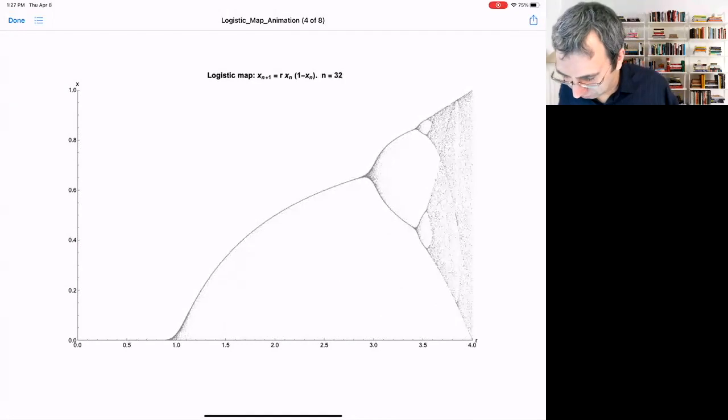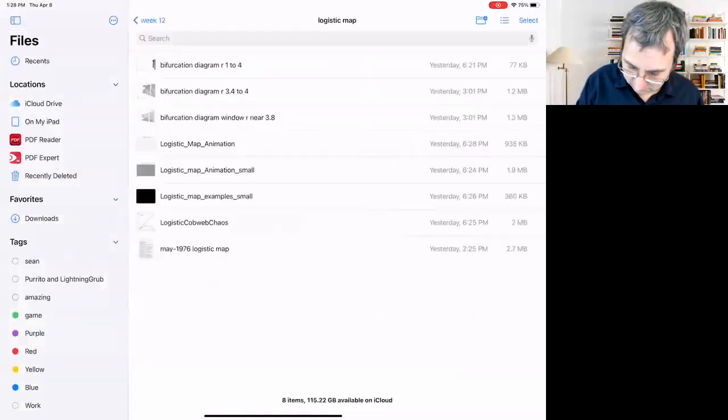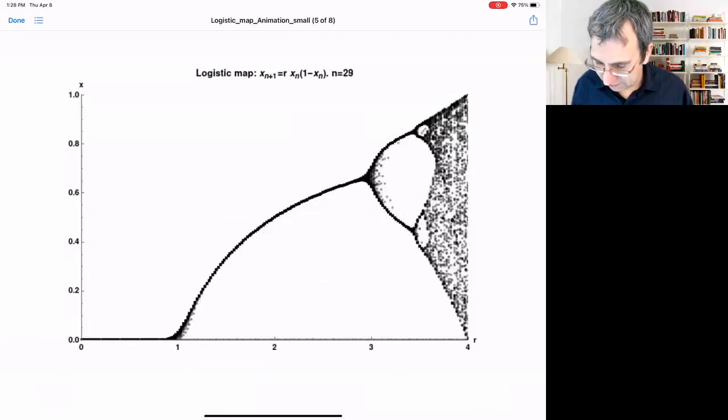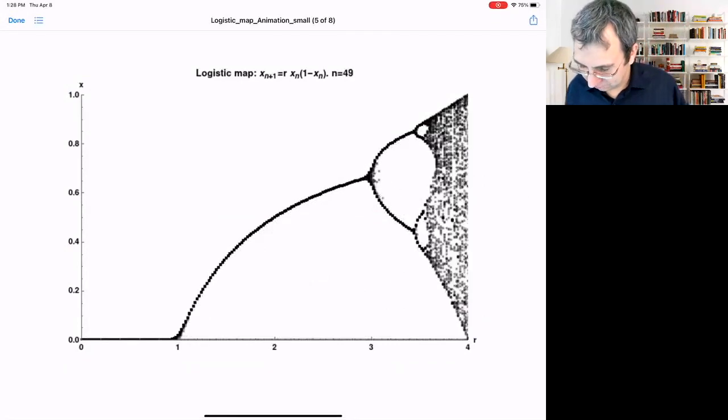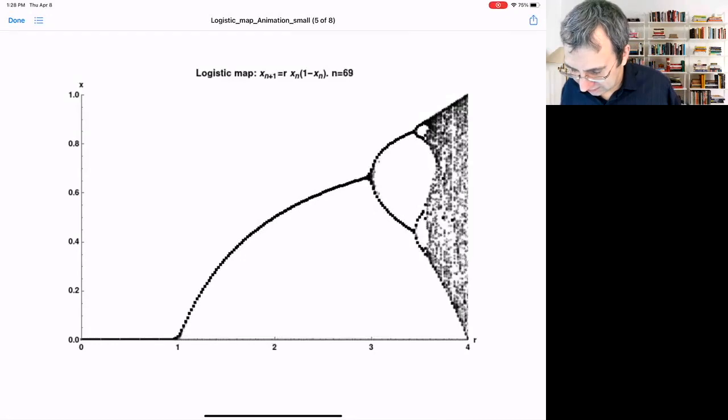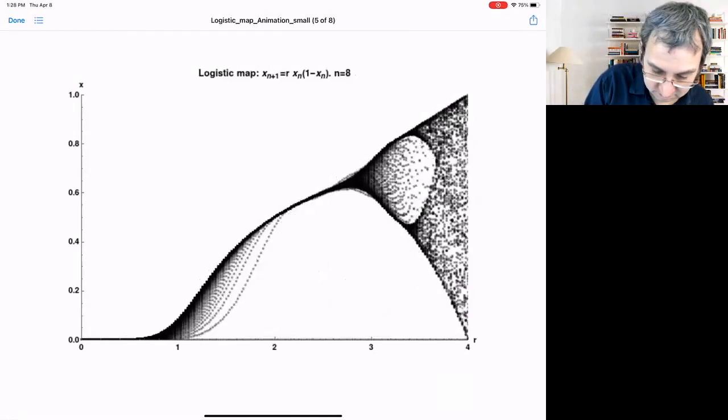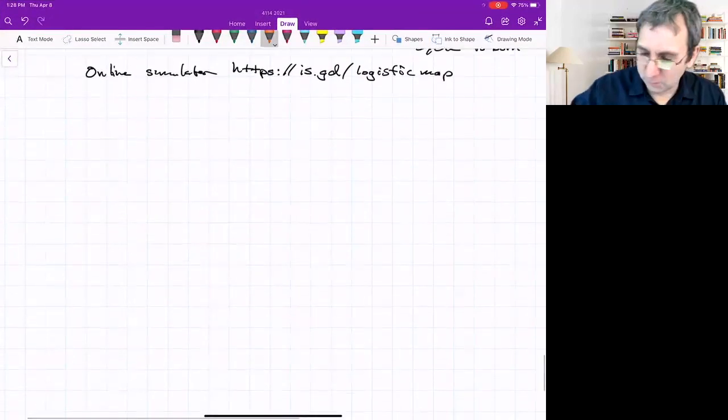You could see this period doubling over to the right and the kind of chaotic regions. If you want another view that's just more pixelated, there it is. It kind of looks like the chaotic parts are seething, but it just means things are kind of changing.